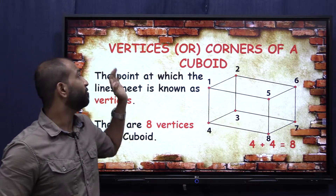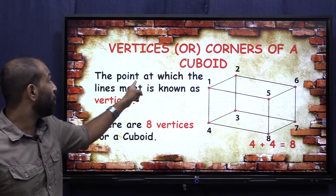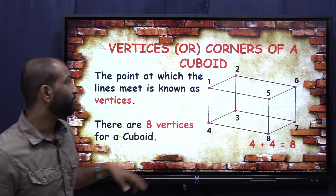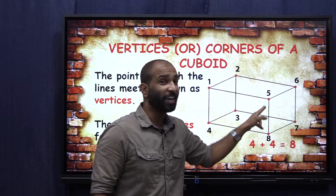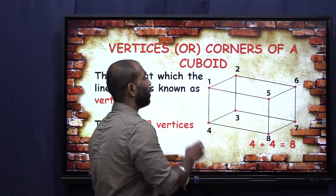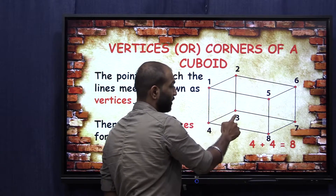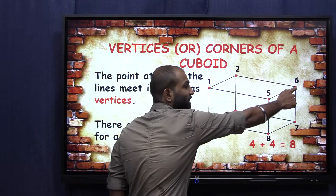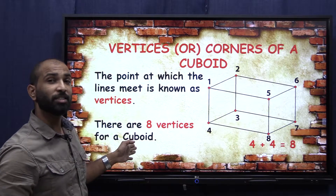Now vertices. Vertices are corners of a cuboid — the point at which the lines meet is known as vertices. You can see this line, this line, and this line; all three lines are meeting at a point, and that is known as vertices. Let's count: one, two, three, four, five, six, seven and eight. So there are eight vertices for a cuboid.